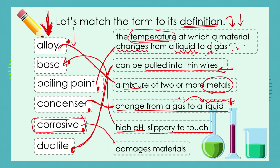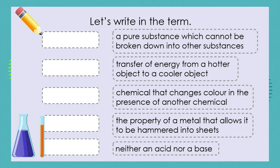That leaves our only remaining term: corrosive, which means it can damage or eat into materials. How many did you get? I hope you got six out of six. Now in the next part we're given the definitions and it's not just a case of matching — this is a little more tricky, we need to know the term that matches the definition. What do we call a pure substance which cannot be broken down into other substances? I hear the word element being shouted — good.